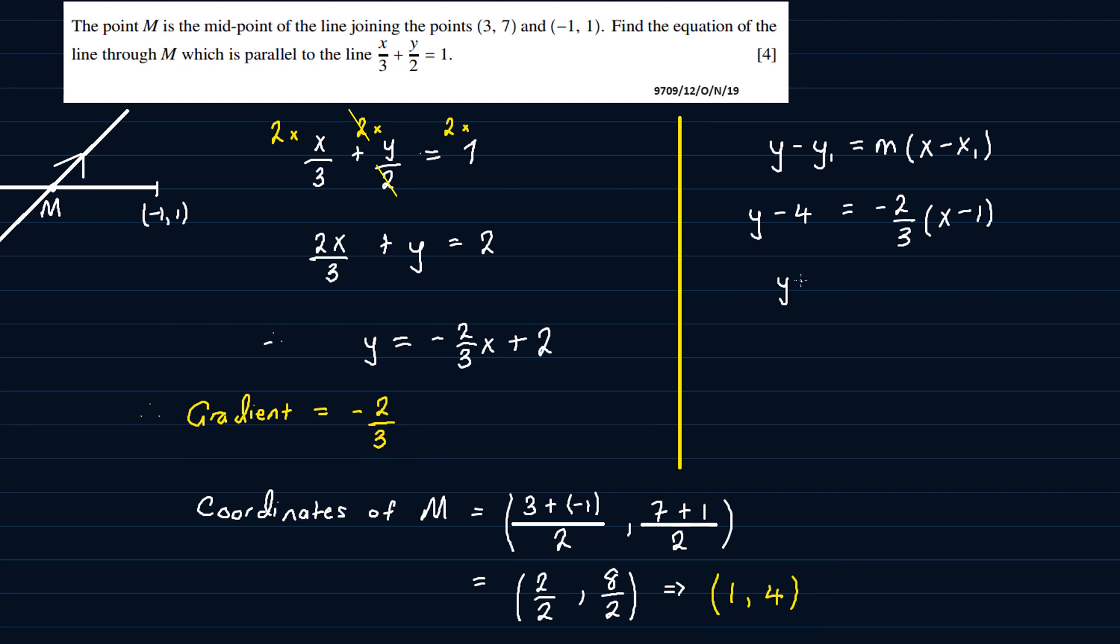We will simplify. Expanding the brackets, we get -2/3x + 2/3. So adding 4 to both sides, we get y = -2/3x + 2/3 + 4. So 2/3 plus 4 will give us 14/3. So this here is the equation of the line, and that's the answer to the question here.